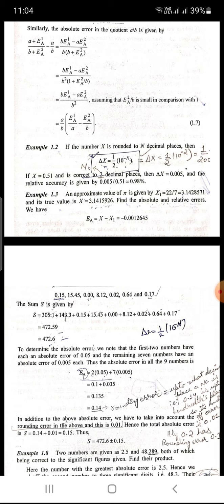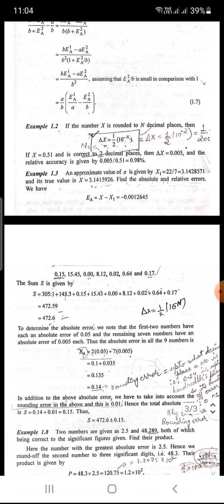So if x equals 0.51 and is correct to two decimal places, then delta x equals 0.005, and the relative accuracy will be given by 0.005 upon 0.51, which equals 0.98 percent.